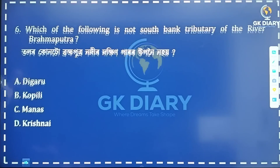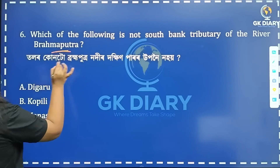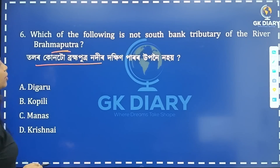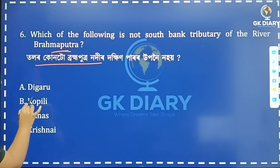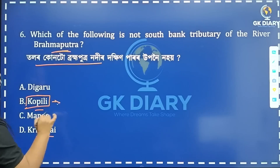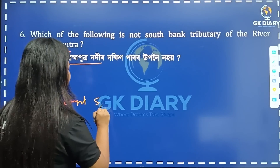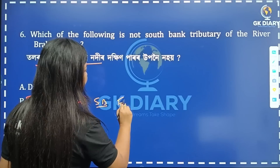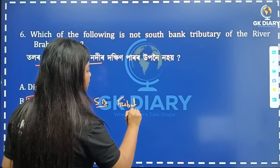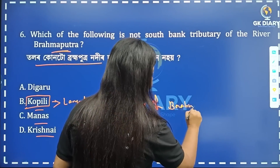Next: which of the following is not a south bank tributary of the river Brahmaputra? So which of the following is not a south bank tributary of the Brahmaputra? What is the correct option?